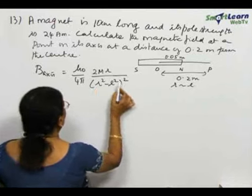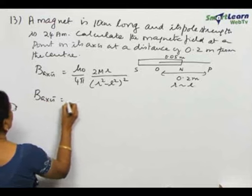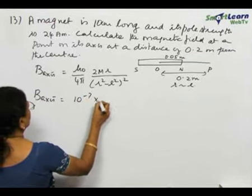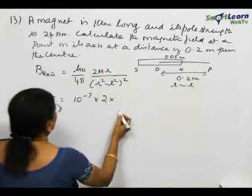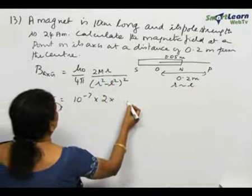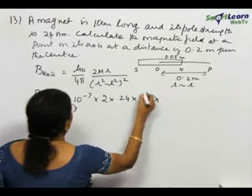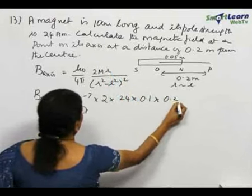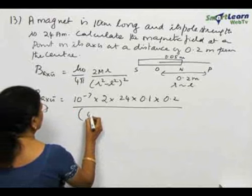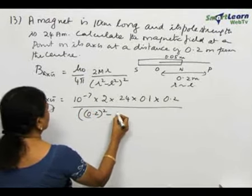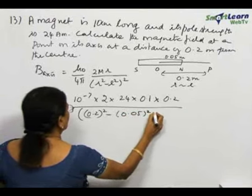We have to use the full formula. So, B_axis = 10⁻⁷ × 2 × magnetic moment. We should calculate pole strength times length. Pole strength is 24. Length is 0.1. R is 0.2 divided by R², that is (0.2)² - (0.05)², the whole square.